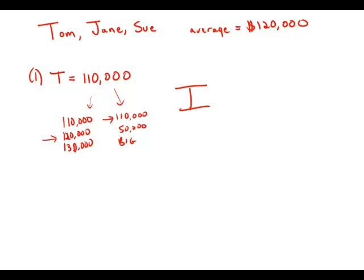So forget about statement number one entirely. Focus purely on statement number two. Statement number two tells us that Jane's house is $120,000. Well, that's interesting because that is the average.